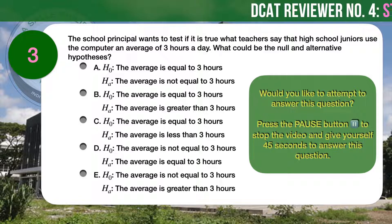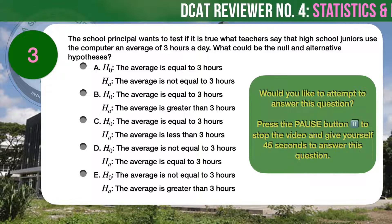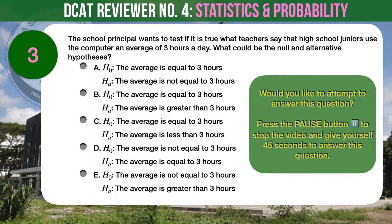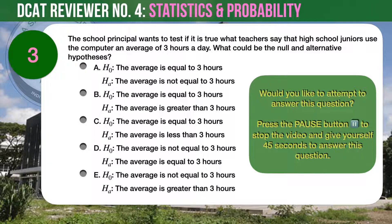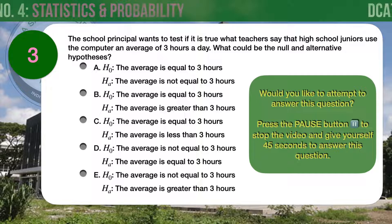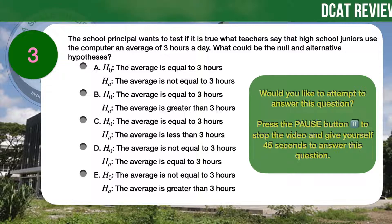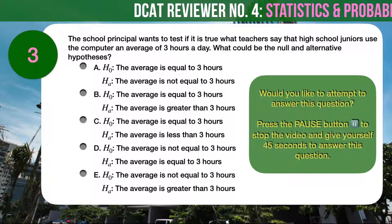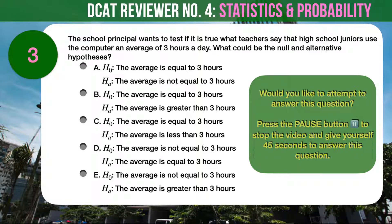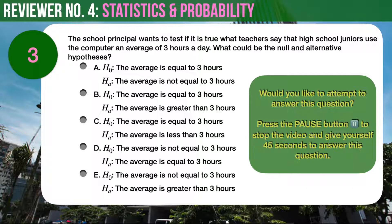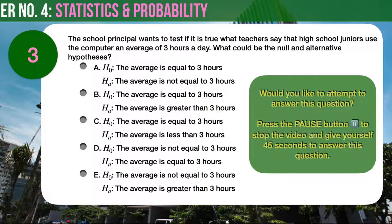B. Null hypothesis: the average is equal to 3 hours. Alternative hypothesis: the average is greater than 3 hours. C. Null hypothesis: the average is equal to 3 hours. Alternative hypothesis: the average is less than 3 hours. D. Null hypothesis: the average is not equal to 3 hours. Alternative hypothesis: the average is equal to 3 hours. E. Null hypothesis: the average is not equal to 3 hours. Alternative hypothesis: the average is greater than 3 hours.